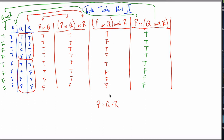Note that the green result is different from the red result. That's confusing because they all say P, or, Q, and, R. The only difference is the order of operations.